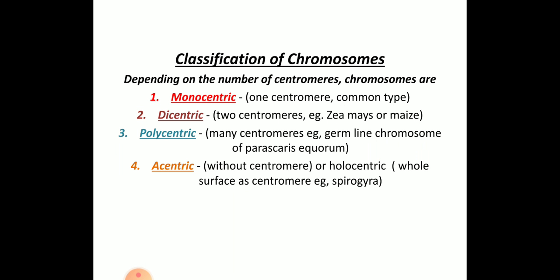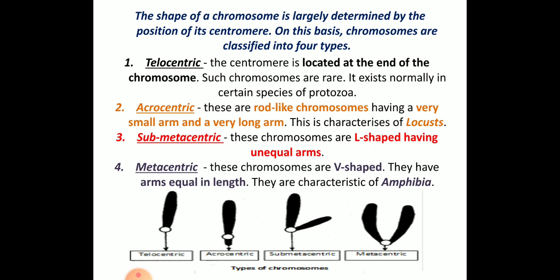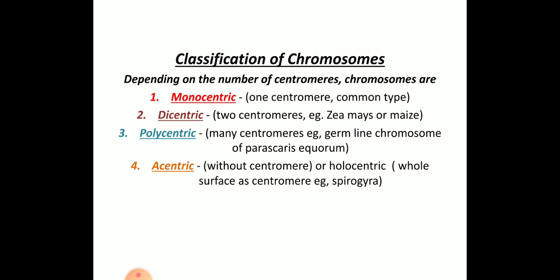This topic can be asked for 5 marks. If they ask you to write a note on classification of chromosomes, you need to write both — including depending on the number of centromeres and the position of the centromere. If they ask specifically, usually they will ask about the position of the centromere, and then you have to write with a neat labeled diagram showing the different types of chromosomes based on the position of the centromere.